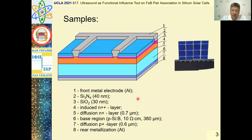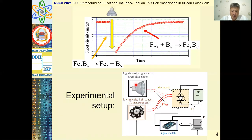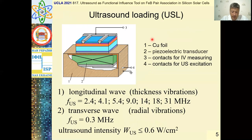The standard silicon solar cells with back surface field configuration were under investigation. The kinetics of short circuit current after intense illumination have been measured to evaluate Iron-Boron Pair Association. The measurements were carried out both with and without ultrasound loading.